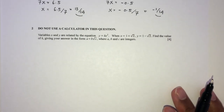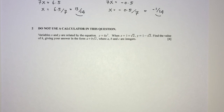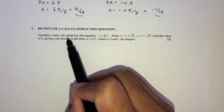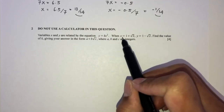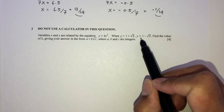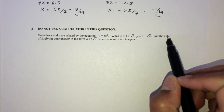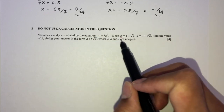Now question number two — do not use a calculator. You can use one if you want to, but the point is we have to show every step along the way of solving this question. Here we have x and y related by this equation, where x and y are given, and we have to find the value of k, giving your answer in the form a plus b root c, where a, b, and c are integers.